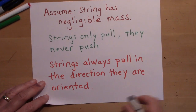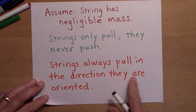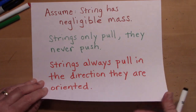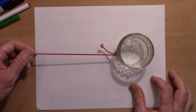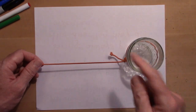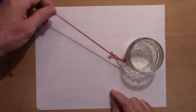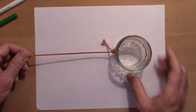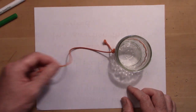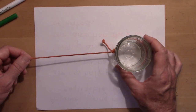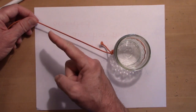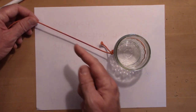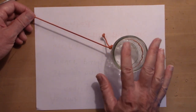When a string pulls, it always pulls in the direction it is oriented — never in any other direction. For instance, with a string attached to this jar, I can pull the jar this way, but I can't pull it a different way without moving the string that way. And I certainly can't push on the jar with the string. So if this string has tension, it's pulling that way; if this one has tension, it's pulling that way. The tension acts along the direction the string is oriented.